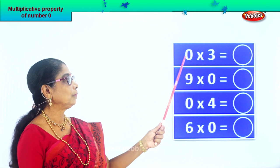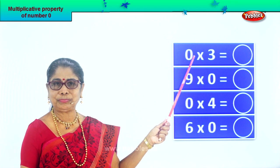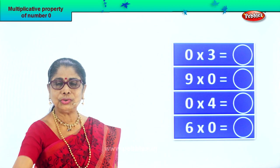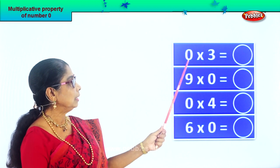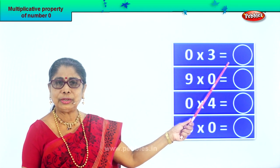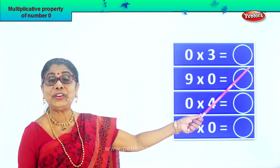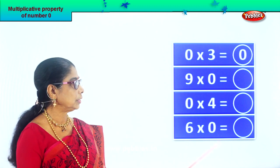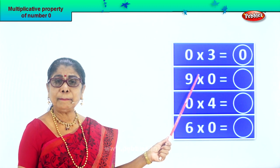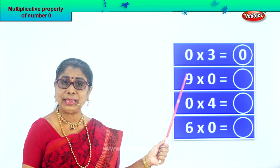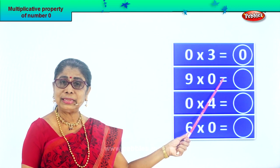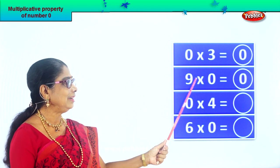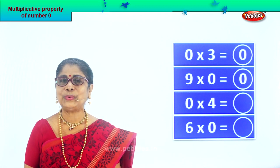Look — zero into three. Zero multiplied by any number gives you what answer? Good, zero itself. So zero into three is equal to zero. Very good. So in this column we write down zero. Number nine multiplied by zero — any number multiplied by zero is equal to what? What is your answer? Good. Nine into zero is equal to zero, very good.